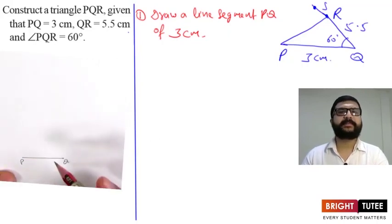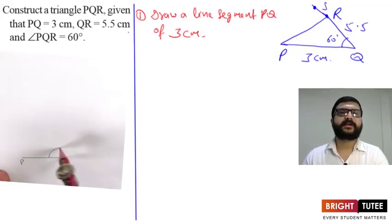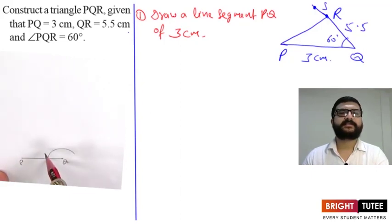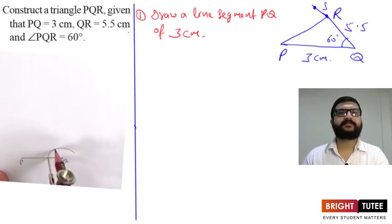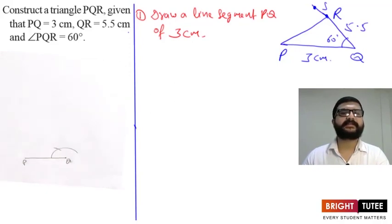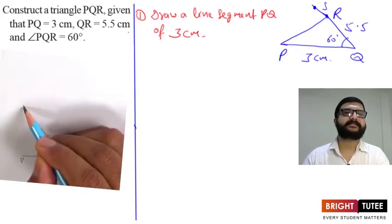Next, we need angle PQR to be 60 degrees, so at point Q we have to construct a 60 degree angle. We know how to construct a 60 degree angle — we keep the pointed end of the compass at Q, draw a semicircle, and then from that point with the same radius we make one arc. This gives us the 60 degree angle.